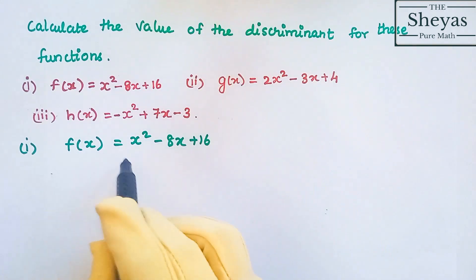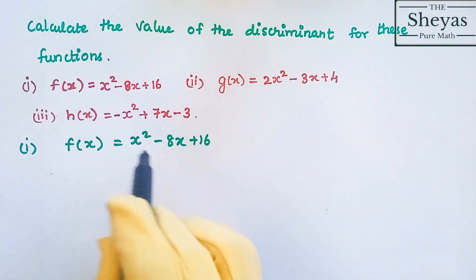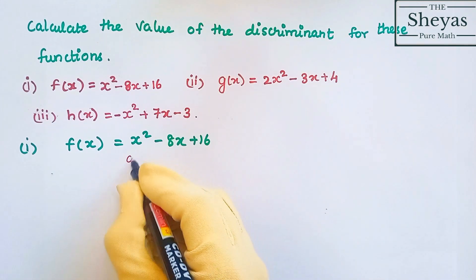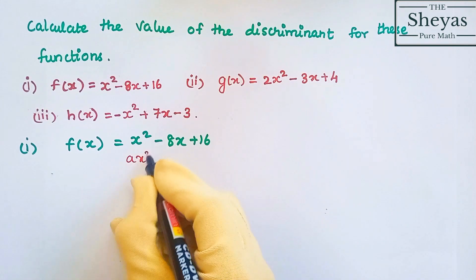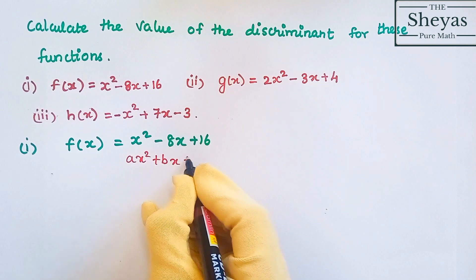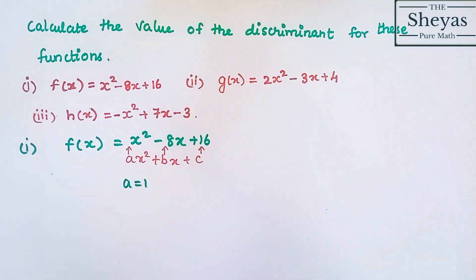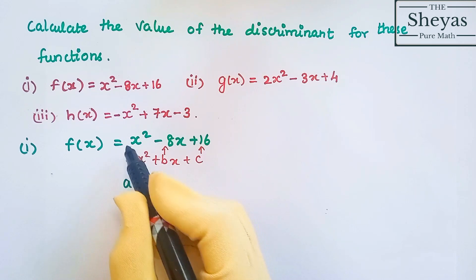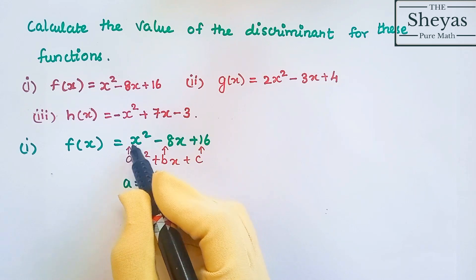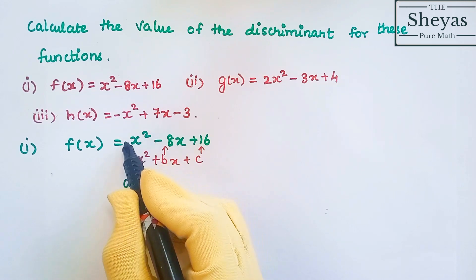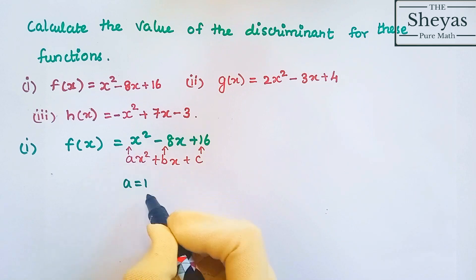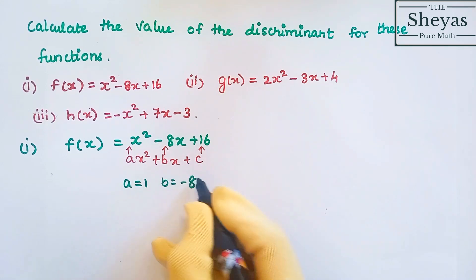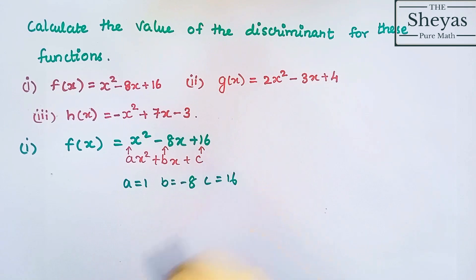We have three functions f of x, g of x and h of x. The first one: f of x is equal to x squared minus 8x plus 16. We know the quadratic equation is of the form ax squared plus bx plus c. Here a is equal to 1, because the coefficient of x squared is 1, b is equal to minus 8, and c is equal to 16.